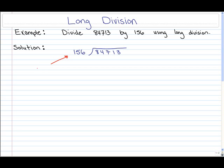So again, here the divisor is the multi-digit number 156 and your dividend here is also a multi-digit number 84,713. Now when dividing using multi-digit divisors it's a little bit more difficult than if your divisor was just a single digit.